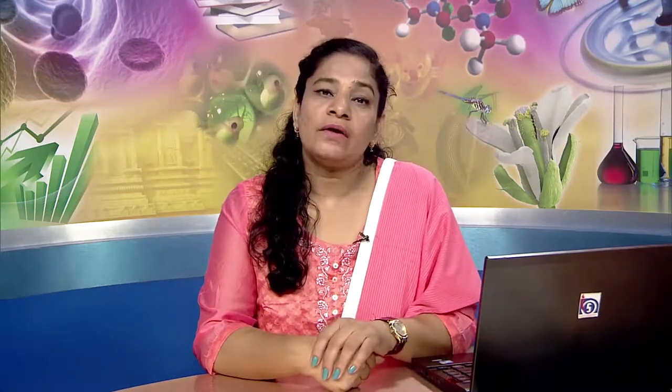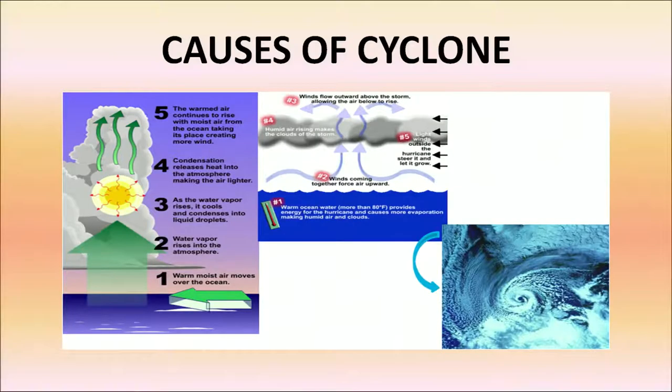A cyclone refers to any spinning storm that rotates around a low-pressure center. The low-pressure center is also referred to as the eye of the storm, which is notably calm compared to the areas under the spinning arms. The arms are where all the action happens — rain and wind. Cyclones form when warm air rises and cools, and cool air cannot hold as much moisture as warm air, so water is squeezed out of the condensing air and a cloud begins to form.